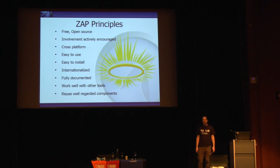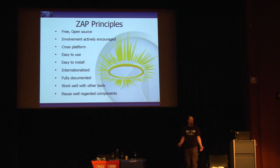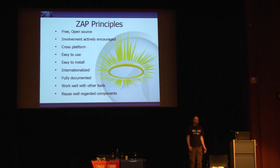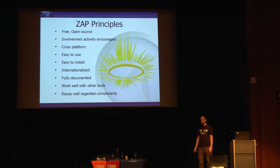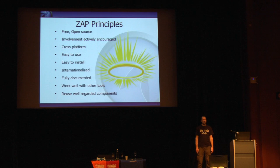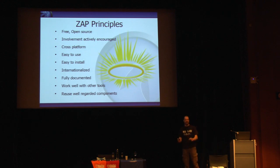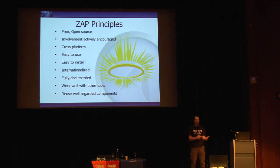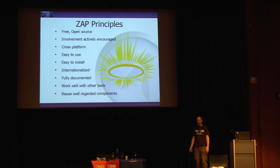ZAP is easy to install. Some security tools are a nightmare with dependencies, but all you need is Java 7 to get ZAP running — the Mac version actually comes with Java 7. It is internationalized, which is very unusual for security tools including commercial ones. It is fully documented — there's a user guide included with ZAP and also online, plus a lot of information on the wiki, though there are things we could and should document better.